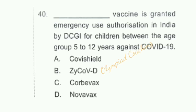Question number 40: Which vaccine was granted emergency use authorization in India by DCGI for children between the age group of 5 to 12 years against COVID-19? Option C is correct — Corbevax.